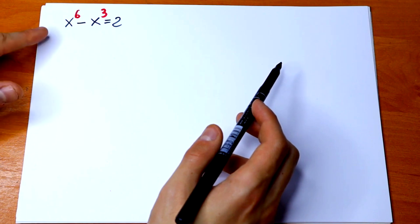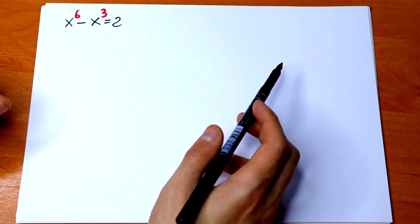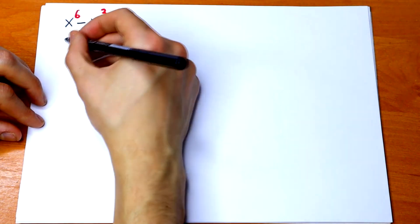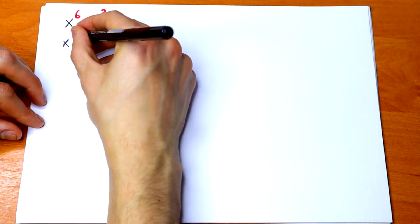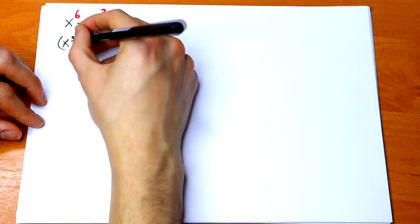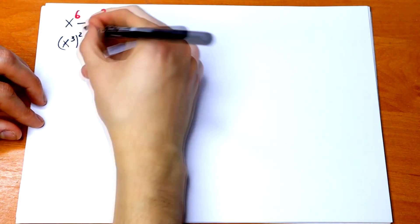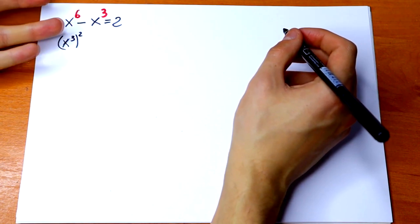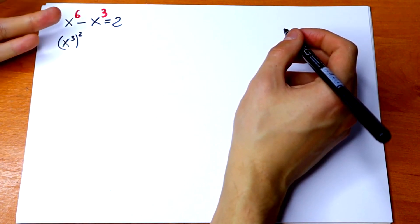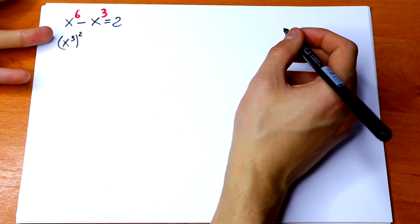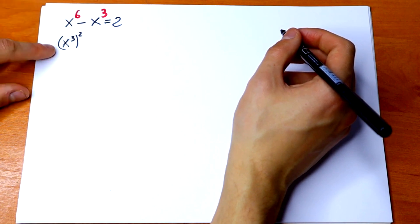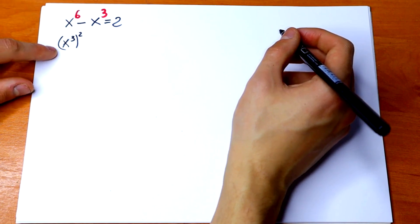First of all, this x to the 6th power can be written as x cube raised to the 2nd power. Because we can multiply these exponents, these powers and we will have x to the 6th power as well. So this is a good rule for us, we can use it.